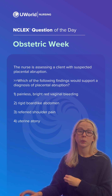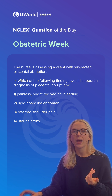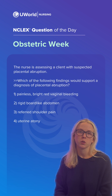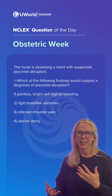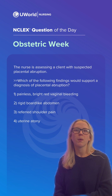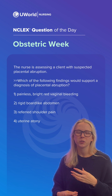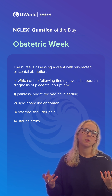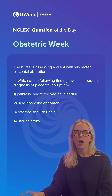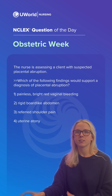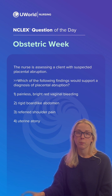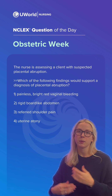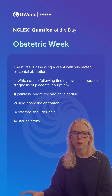Options one, three, and four were incorrect. We're often going to see vaginal bleeding as mentioned in option one, but typically it's not painless. Other symptoms of placental abruption also include uterine tenderness and abdominal pain, so not typically painless bleeding. Option three — referred shoulder pain — is typically a sign of ruptured ectopic pregnancy. It can also be a sign of referred gas pain, not typically a sign of abruption.